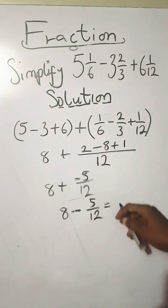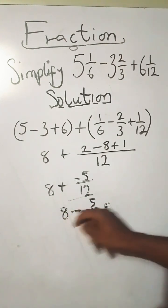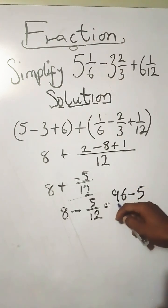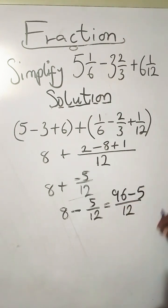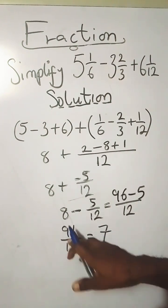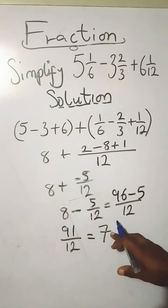96 minus 5 is 91 over 12. This leaves you with 7 as a whole number, because 12 goes into 91 seven times, and you have a remainder of 7 over 12.